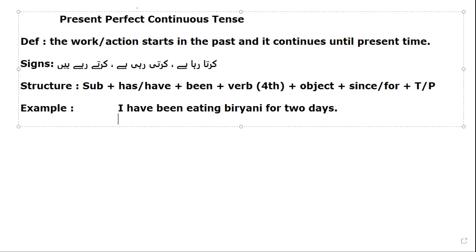Now think about the works that you have been doing from some time ago in the past — like what works you have been doing since morning, or for two days, five days, one week, one month, or even for five years. We'll come to the since and for rule, just don't forget that. Let me make another sentence so that you can get more ideas.